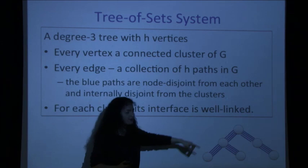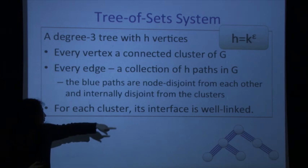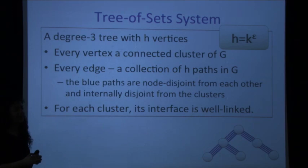One extra requirement: if we look at any cluster, its interface vertices — all the vertices it shares with the blue paths — must be well-linked inside the cluster. This time the interface can come from up to three sides. As before, h is both the number of paths in every bundle and (roughly) the number of clusters, and it will be about k^ε.